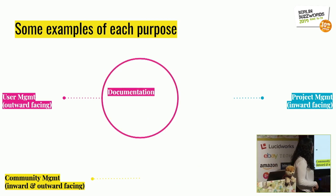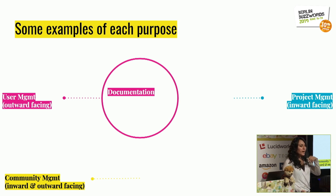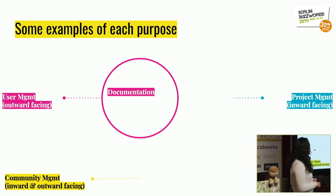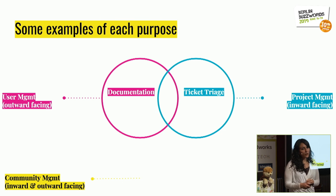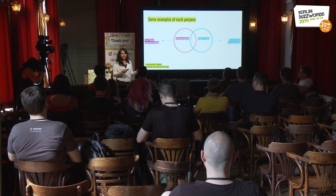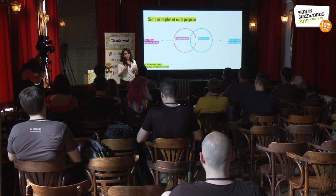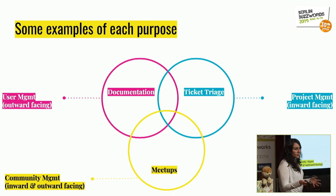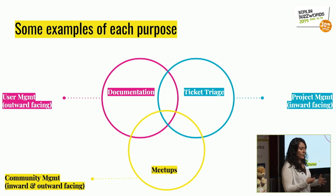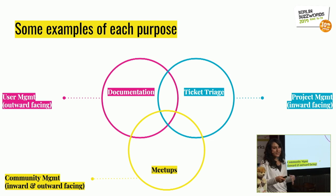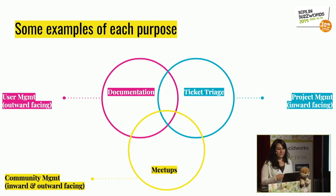For user management, we have documentation — the landing for everyone interested in either using your technology or contributing to it. For project management, take triage: if you don't triage all the different issues in Jira or GitHub, you don't know how to prioritize the work the community is doing. And for community management, meetups are very important because they bring together your community and provide that opportunity for folks to interact face-to-face.